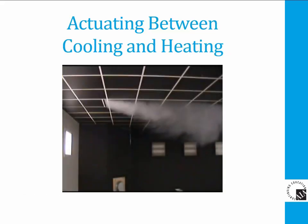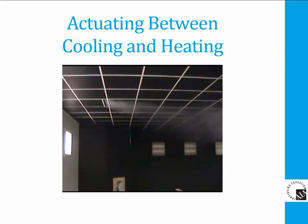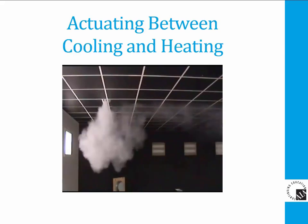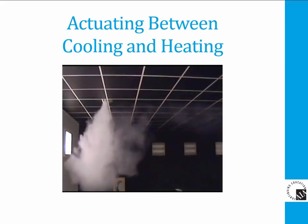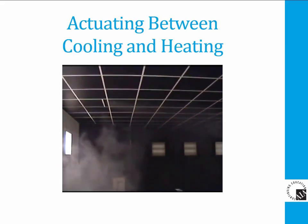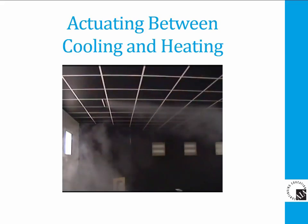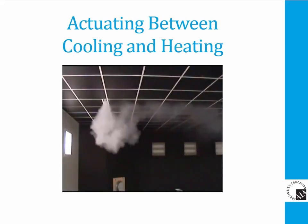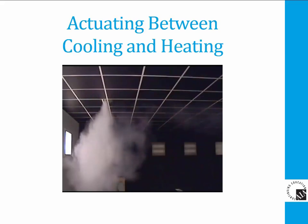This smoke video illustrates that when the supply air reaches the changeover temperature, the pattern switches instantly from horizontal cooling to vertical heating and then back on demand. The heating pattern is directed back at an angle of about 10 degrees so that the unit can be located 18 to 24 inches away from the glass, with the air directed toward the front edge of the glass.